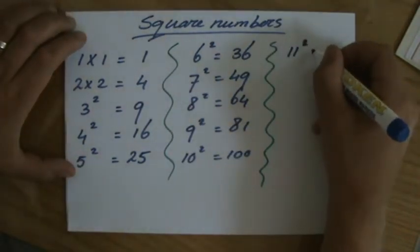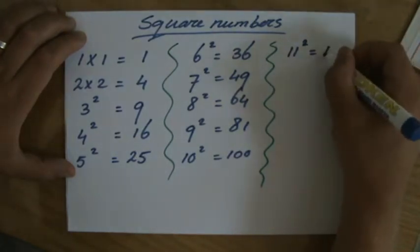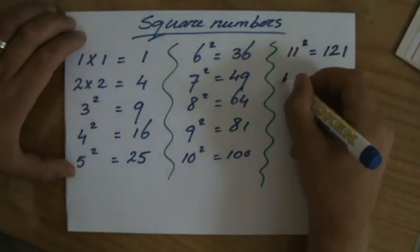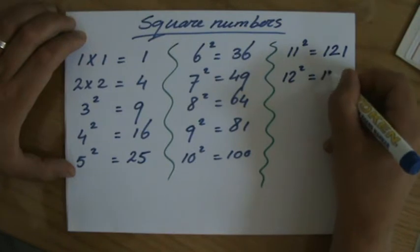11 squared is 121, 12 squared is 144, 13 squared is 169, 14 squared is 196, and 15 squared is 225.